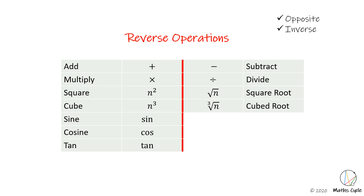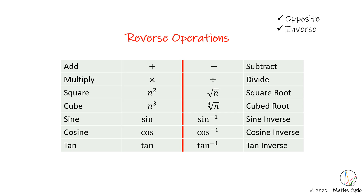I like to call it reverse because when we are balancing equations the reverse of an operation will cancel it out. Now we have three new operations: sin, cos and tan, and these are operations that find the ratio attached to an angle. So what are the reverse operations to sin, cos and tan? They are called sin inverse, cos inverse and tan inverse, and they are recognisable by this little power to the minus one.